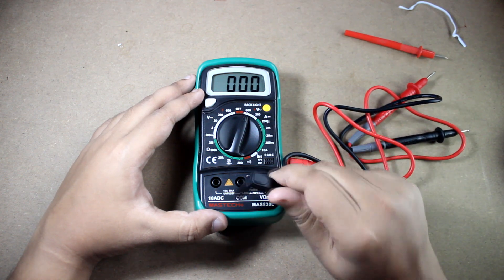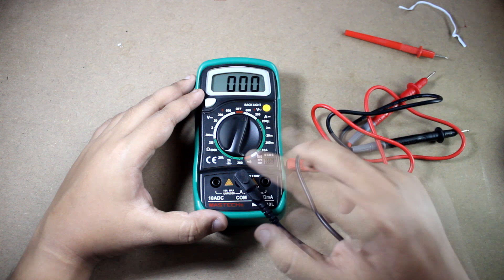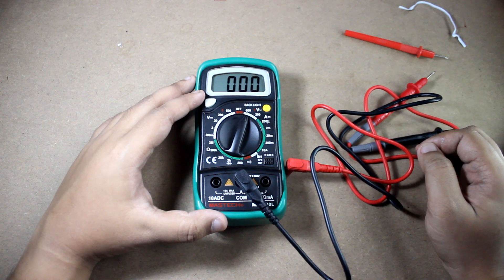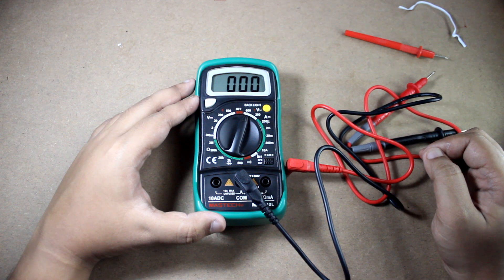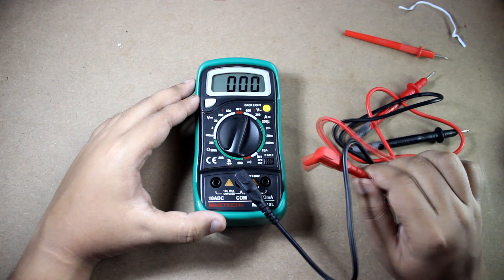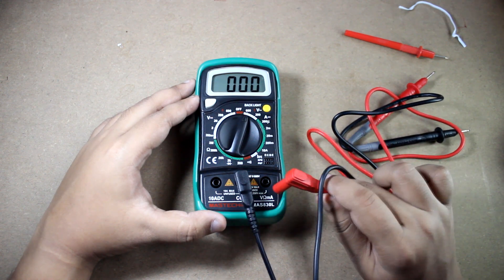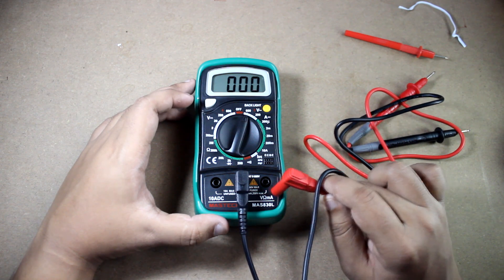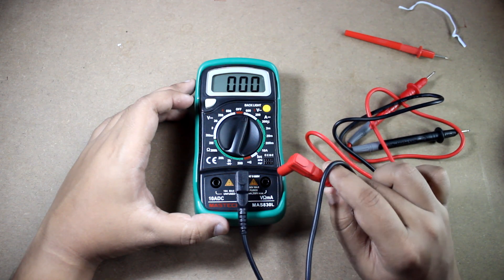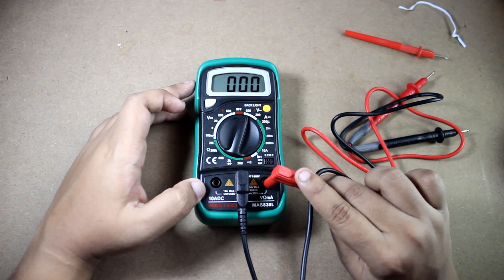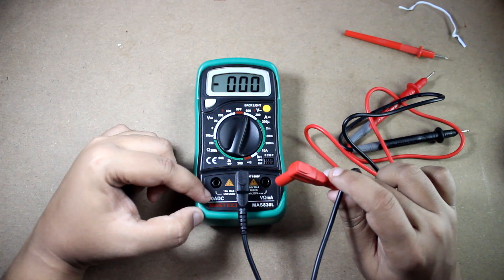The second step is put the common probe to the common terminal, done. The third step is very important. Put this positive probe or the red probe to the V ohm milliamp terminal. You can see it is written here.